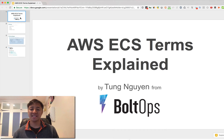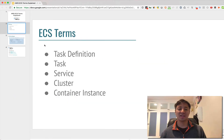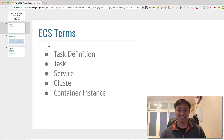Hi, this is AWS ECS Terms Explained. In this video, I'm going to cover the ECS terms that you're gonna need to know if you're working with AWS ECS. The terms are task definition, task, service, cluster, and container instance.